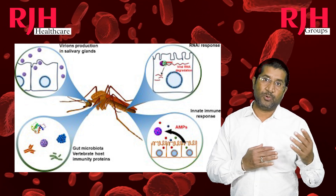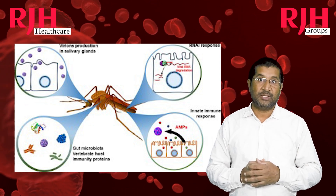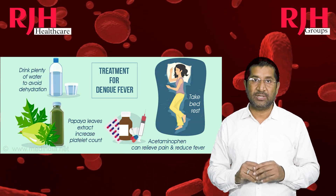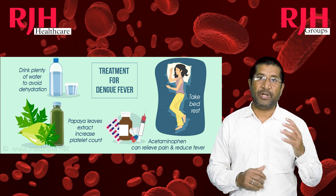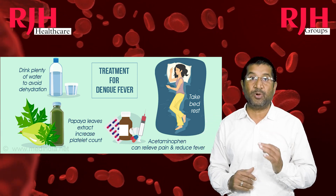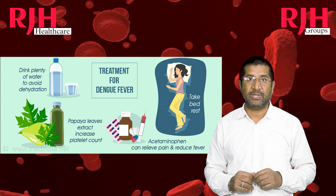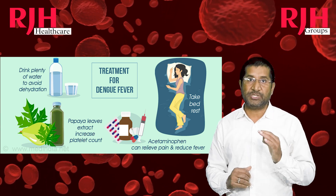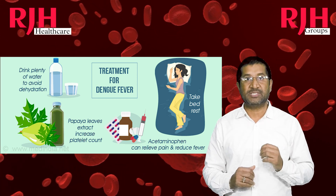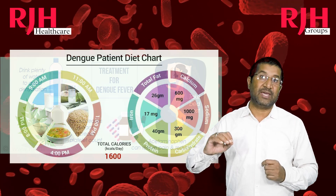There is no specific antiviral treatment for Dengue fever as of now. Treatment focuses on managing symptoms and providing supportive care. It is crucial to rest, drink plenty of fluids, and take paracetamol to reduce fever under medical guidance. In severe cases, hospitalization may be required with close monitoring of platelets, intravenous fluid administration, and in some cases platelet transfusion based on platelet levels. Most cases can be treated on an outpatient basis.